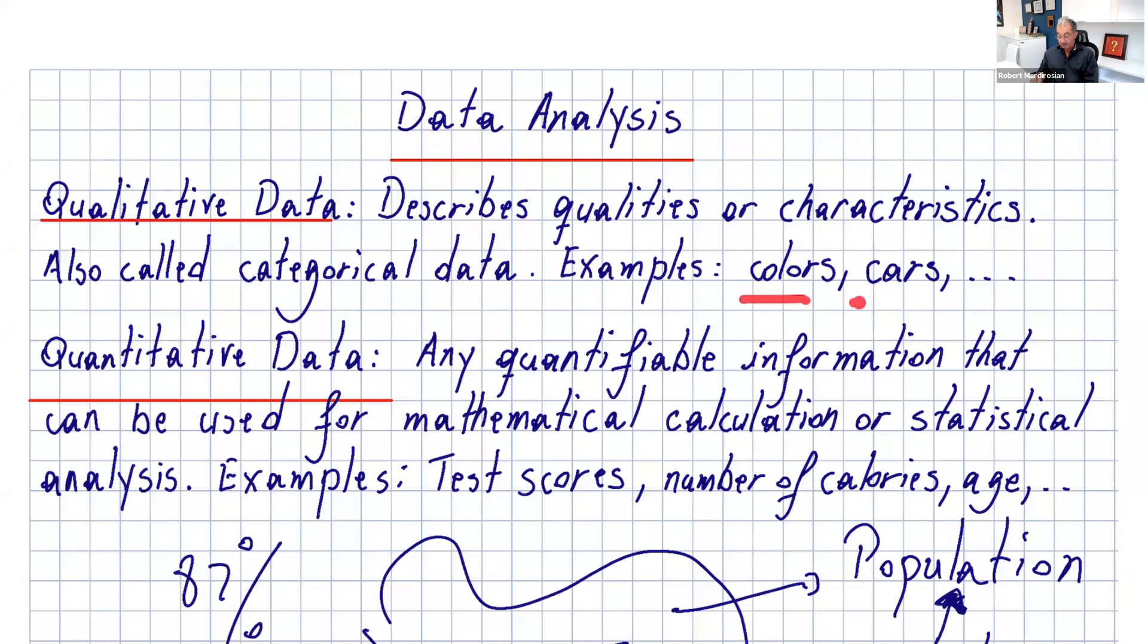Examples of that can be colors, cars. If you ask a group what's your favorite color and what's your favorite car, the information you get from them is data, and there's no numbers involved.